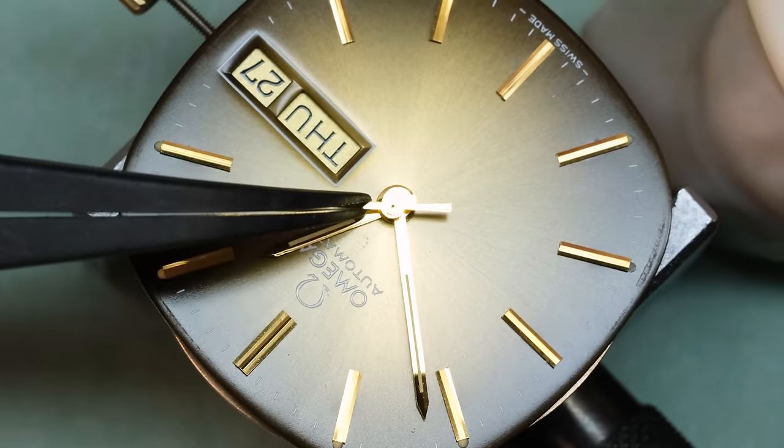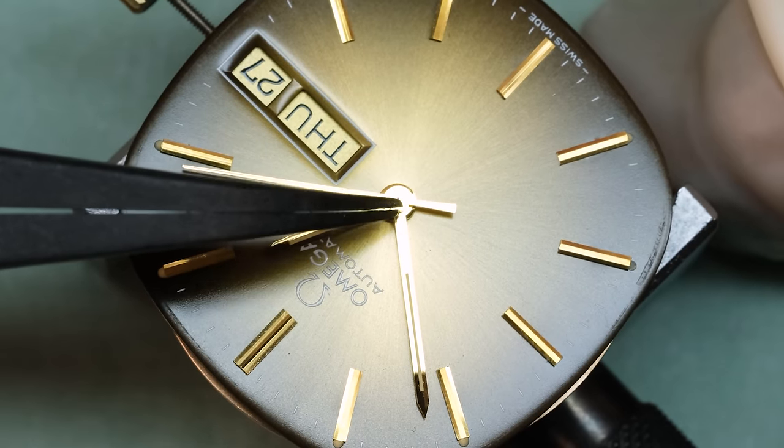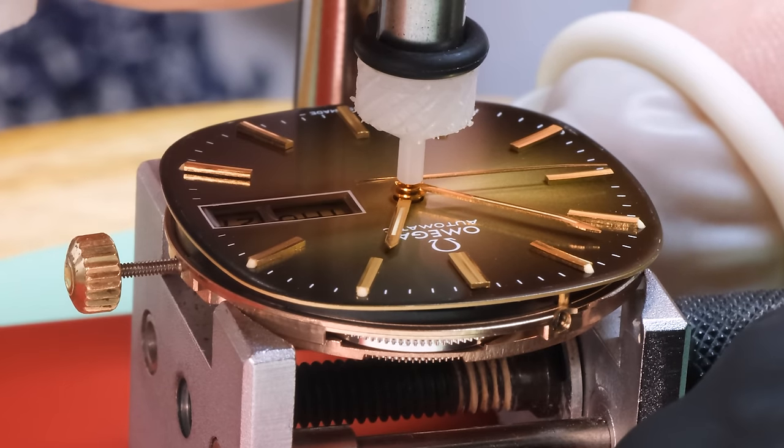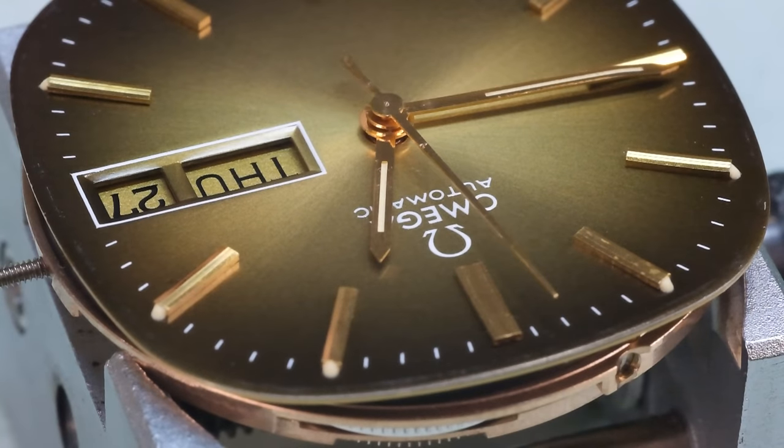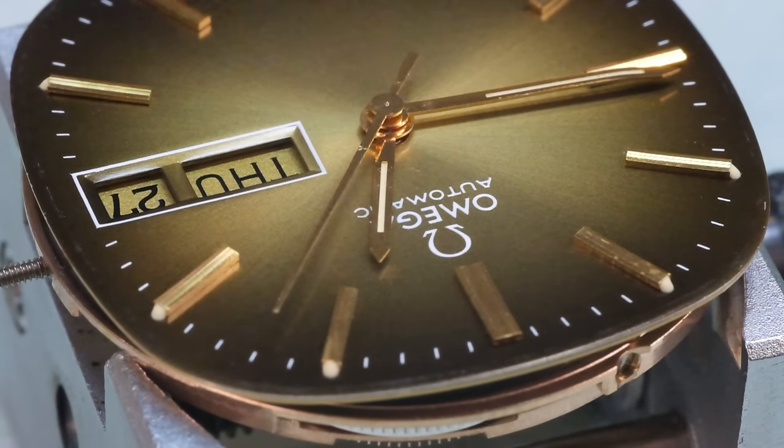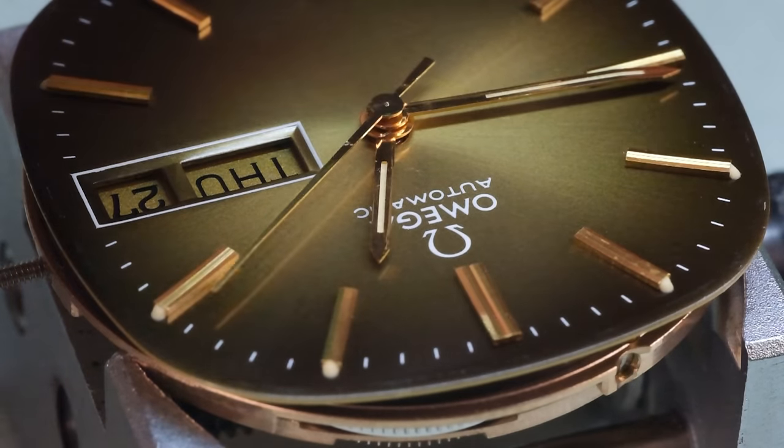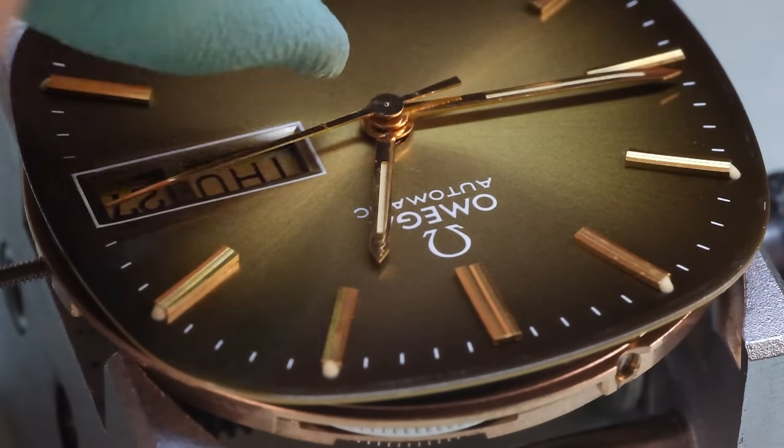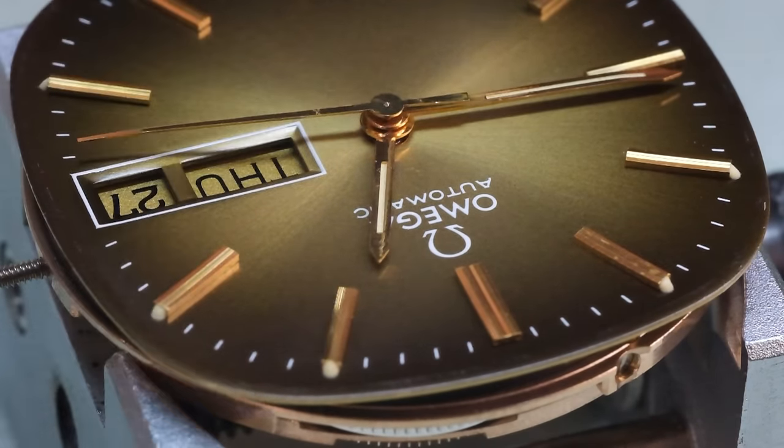So for a high-beat watch like this, one of the more pleasing visuals is that the seconds hand moves very smoothly across the dial. So let's slow that down and have a look. So one, two, three, four, five, six, seven, eight. So for every second, the seconds hand moves eight times. And that's for a 28,800 watch. 36,000 beats per hour would of course move 10 times for each second.